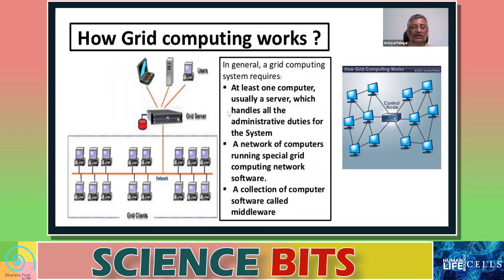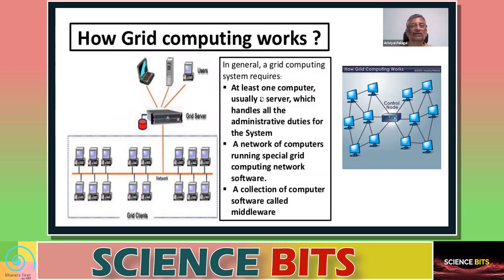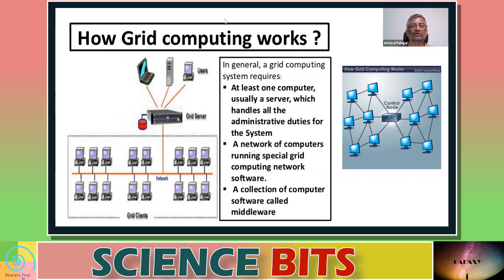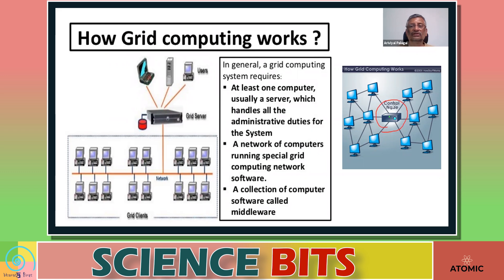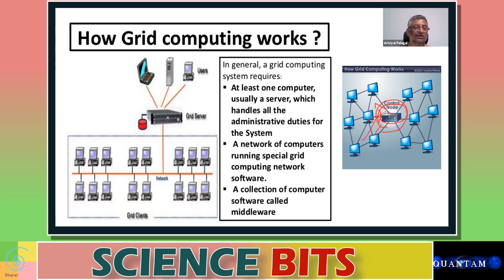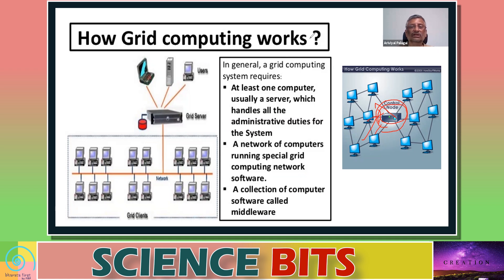Grid computing is basically a system where one computer — usually a server — handles the administrative duties for the system. One of the computers in the network acts like an administrator: it controls every other system, gives jobs to each of them, collects the results back, and the final computation happens in the control system.